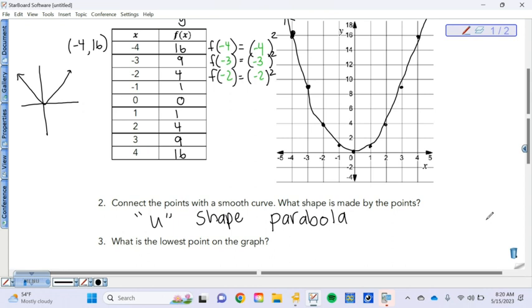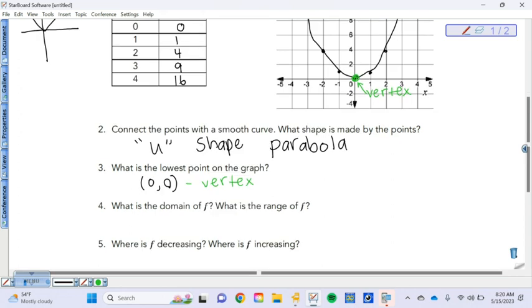And what's the lowest point on this graph? What is the minimum point on the graph? 0, 0, right? This point right here. Do you guys remember what that point is called? That place where the parabola turns around? Yeah, the vertex. Vertex. Good.